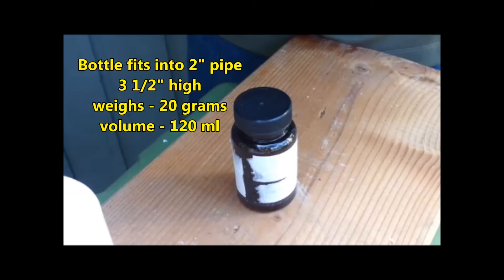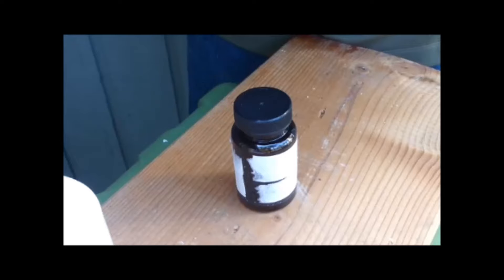The vitamin bottle fits into the two inch PVC pipe. This bottle is three and a half inches high, weighs 20 grams and has a volume of 120 milliliters. It will have a maximum buoyancy force of 100 grams because 20 grams of buoyancy force are needed just to lift the bottle.